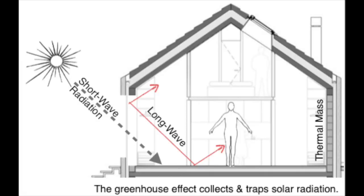Direct solar gain systems. Every south-facing window creates a direct gain system, while windows facing east, west, and north lose more heat than they gain in the winter. The greenhouse effect acts as a one-way heat valve — it lets the shortwave solar energy enter but blocks the heat from escaping. The thermal mass inside the building then absorbs this heat, both to prevent daytime overheating and to store it for nighttime. The proper ratio of mass to south-facing glazing is important.